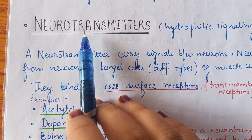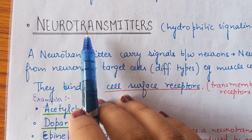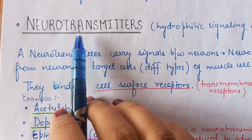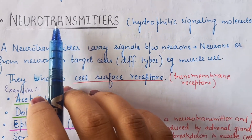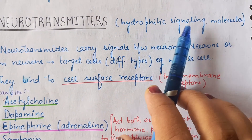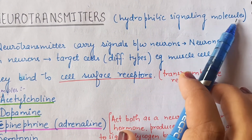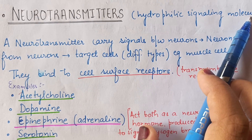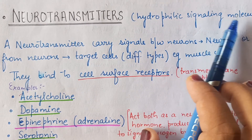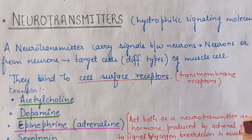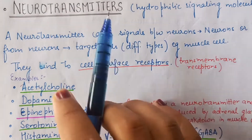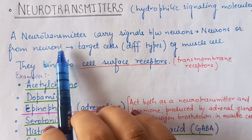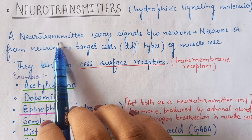In contrast, steroid hormones consist of nuclear receptors. Neurotransmitters are hydrophilic signaling molecules while steroid hormones were hydrophobic signaling molecules. So neurotransmitters are signaling molecules or ligands that carry signals in the nervous system.